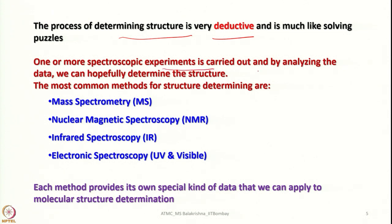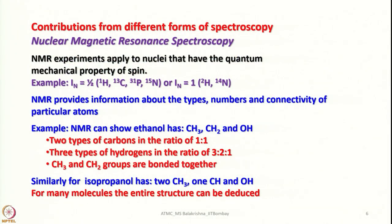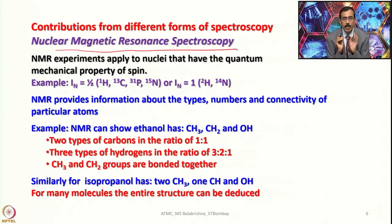One or more spectroscopic experiments are carried out and by analyzing the data we can hopefully determine the structure. The most common methods for structural determination are mass spectrometry, nuclear magnetic resonance (NMR) spectroscopy, infrared spectroscopy (IR), and electronic spectroscopy (UV and visible). Each method provides its own special kind of data that we can apply to molecular structure determination. When you club together all this information, without any ambiguity we can understand the structure of a molecule. Contributions from different forms of spectroscopy collectively help in understanding and purifying a sample.